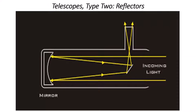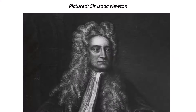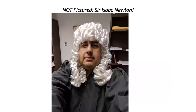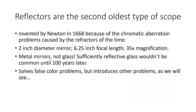The second type of telescope is the reflecting telescope. Here's a basic diagram of the Newtonian reflector — mirror-based, not lens-based. Unlike a refractor where you look at the back, you look near the front. Reflectors were invented by Newton in 1668 to solve the chromatic aberration problem of refractors. His original Newtonian had a two-inch mirror, a 6.25-inch focal length, and a magnification of 35.